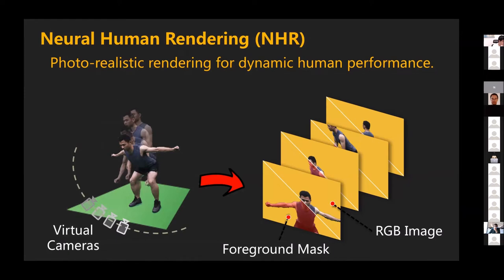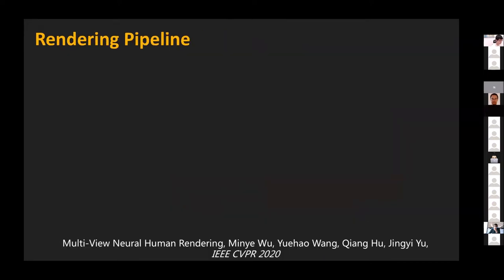A few years ago we started to revisit the problem and observed that maybe we're on the wrong track of just merely improving reconstruction quality. Despite advances in cameras and algorithms, robust 3D reconstruction remains very challenging. We use the commercial software Capture Reality for comparison — whenever there are textureless regions or heavy occlusions, it fails badly and requires tremendous artist effort to fix. So how about we try to learn to fix the errors, which we call neural human rendering, published two years ago.